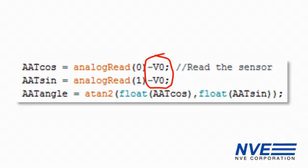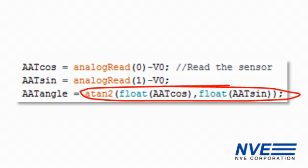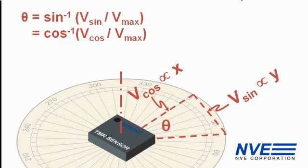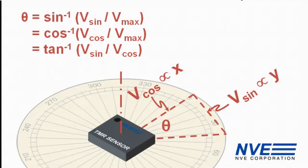The simplest way to get the indicated angle is the inverse tangent of the ratio of the cosine and sine outputs. We could take the inverse sine and cosine of each output, but we'd have to scale the outputs and figure out the quadrature. But because the arctangent calculation is a ratio, it doesn't need scaling and cancels power supply variations. The two-variable arctan calculation provides a full 360-degree range.